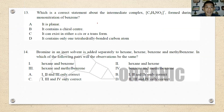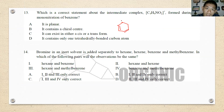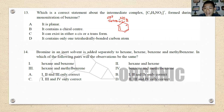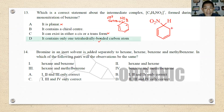Number thirteen: which statements about the intermediate complex C6H6NO2+ formed during nitrobenzene formation are correct? The carbon in the intermediate is sp3, therefore it is tetrahedral — it is definitely not planar. It may have a chiral centre. It cannot exist as cis-trans isomers. It contains only one tetrahedrally bonded carbon atom — this is certain. The best answer is D.